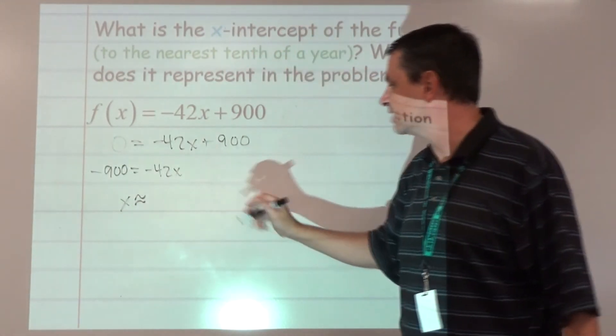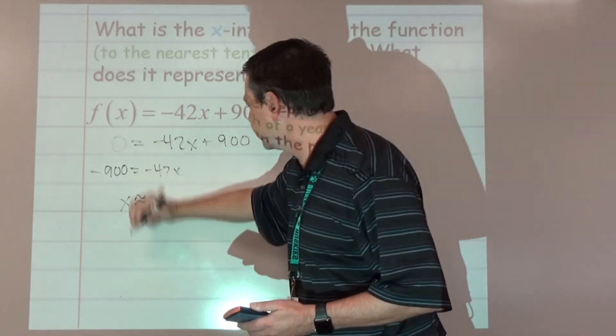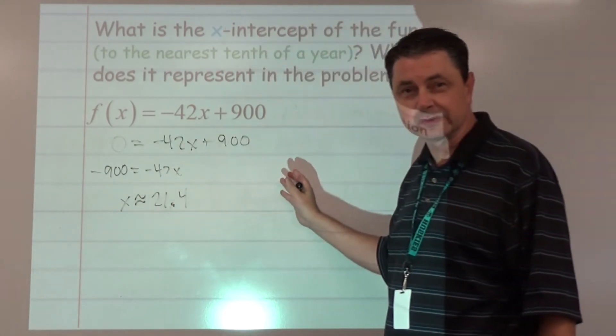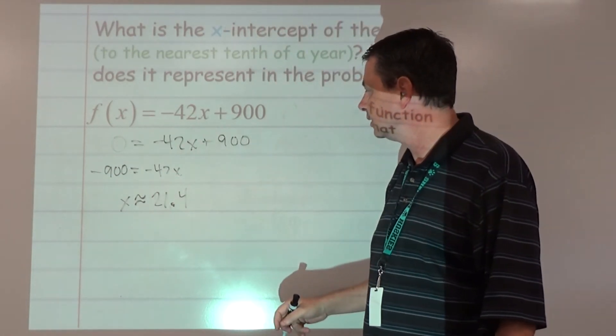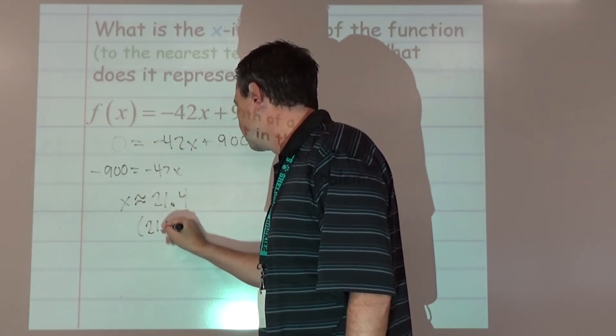Tenth of a year is one decimal place, so we're going to go 21.4. And then the 2 follows, means we don't bump that up. We want to turn that into a point: (21.4, 0).